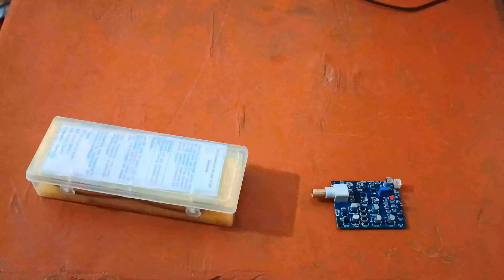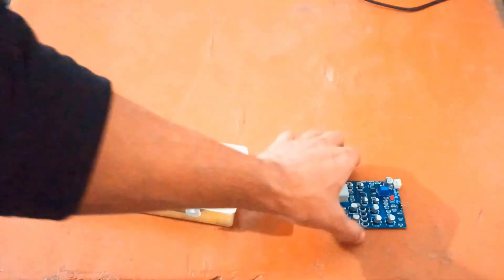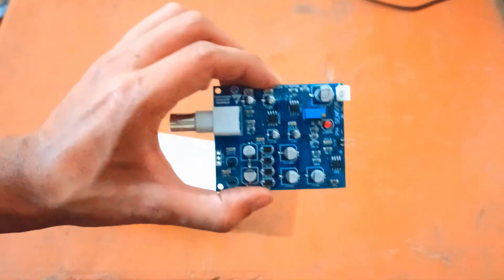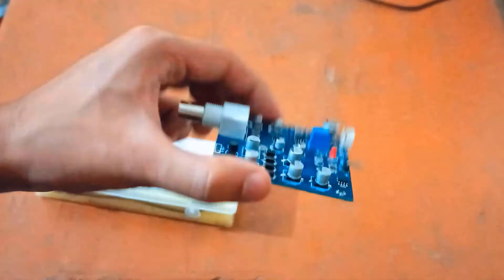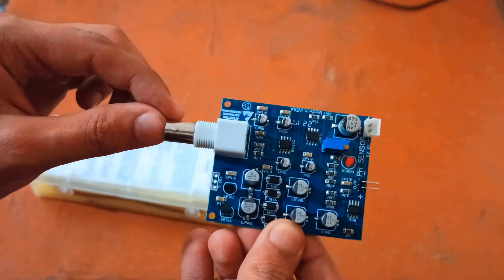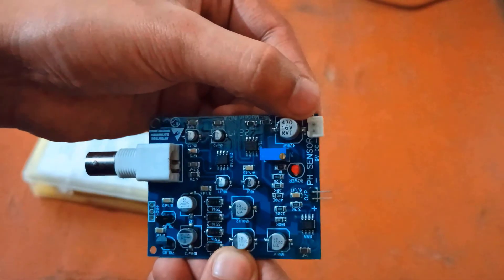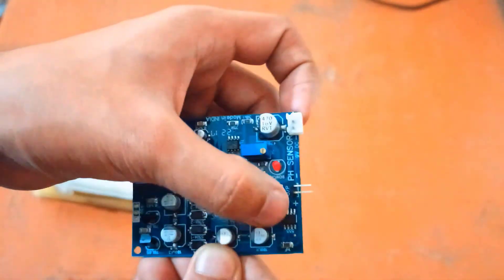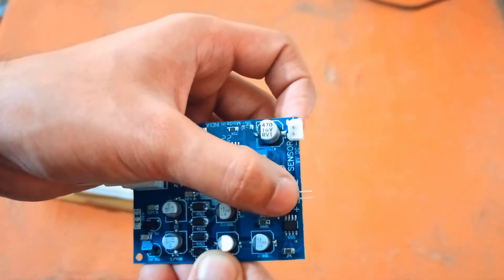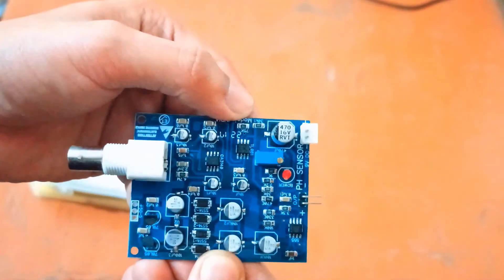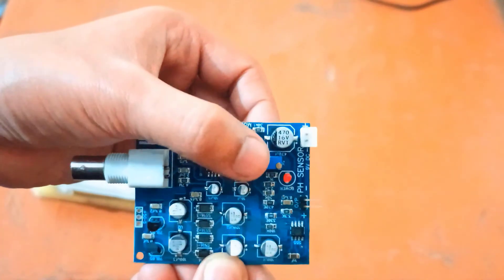Now let's see the pH sensor kit. This analog pH meter kit with industrial real-time online electrode is specially designed for Arduino and other microcontrollers. This is the main signal processing board which has a BNC connector. This is the power supply pin that accepts 9 volts DC supply, and these are the output analog pins that give the result as output. There is a potentiometer that is used for calibration.